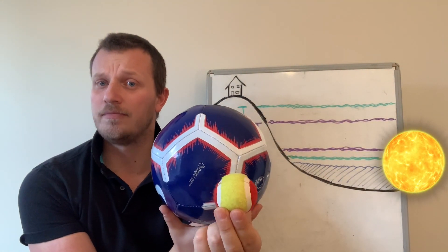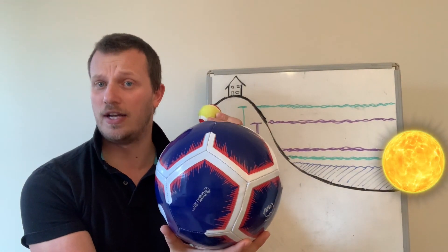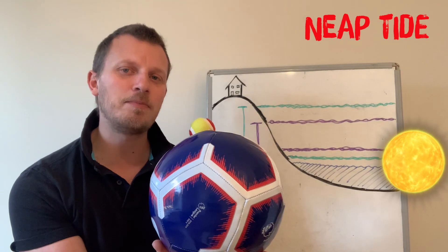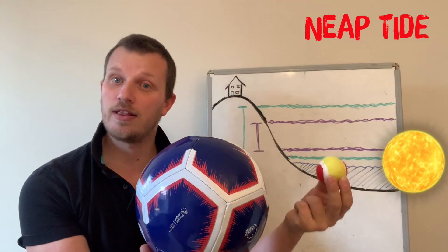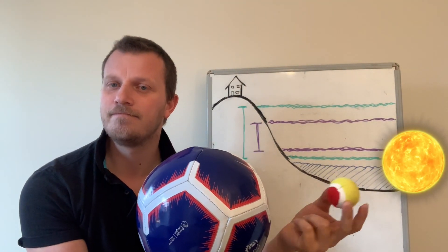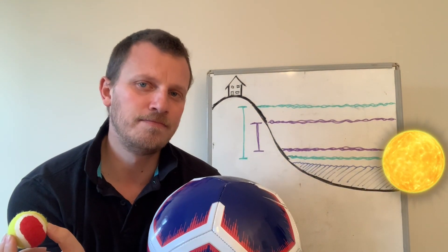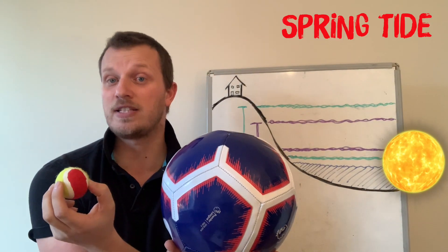Now if the moon is sideways onto the sun, either here or on this side, it's going to be a half moon and that's going to give us a neap tide. If the moon's roughly around here or here and we've got a new moon or a full moon, that's going to be a spring tide.